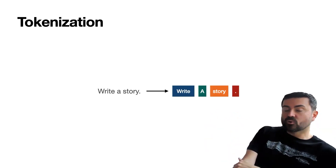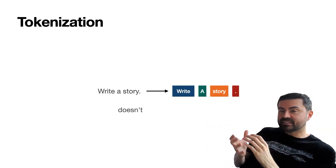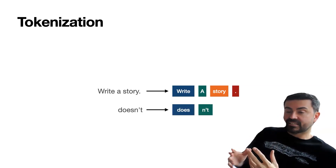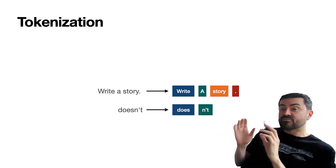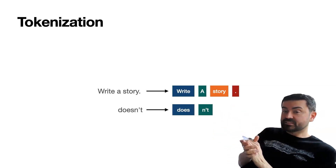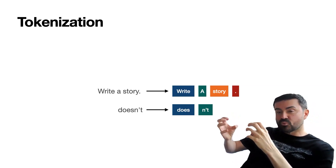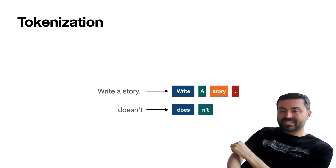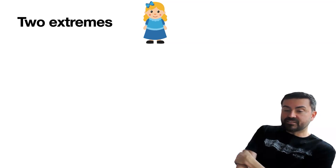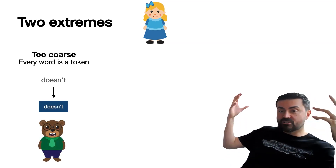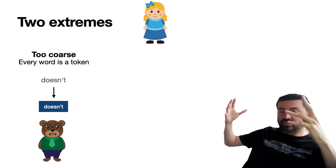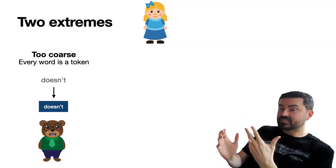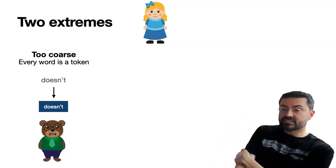For the most part, tokens are words — each word is a token. But sometimes you have more complicated words like 'doesn't,' which turns into two tokens: 'does' and 'n't.' Not every tokenizer does this; some do it differently, but the idea is that you're breaking down the words into sensible pieces. Now there are two extremes. You could have the most coarse tokenizer where every single word you put in is a token — that's way too many tokens for a model to process.